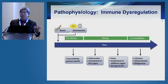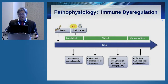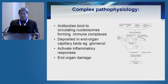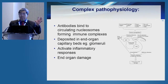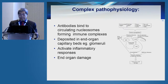We don't fully understand the mechanisms behind lupus, but it's a combination of genetic predisposition interacting with the environment. This causes production of autoantibodies, and these antibodies form immune complexes which are deposited in end organs such as the eye and the kidneys. Once these immune complexes are deposited, there's an inflammatory response and eventually end organ damage.